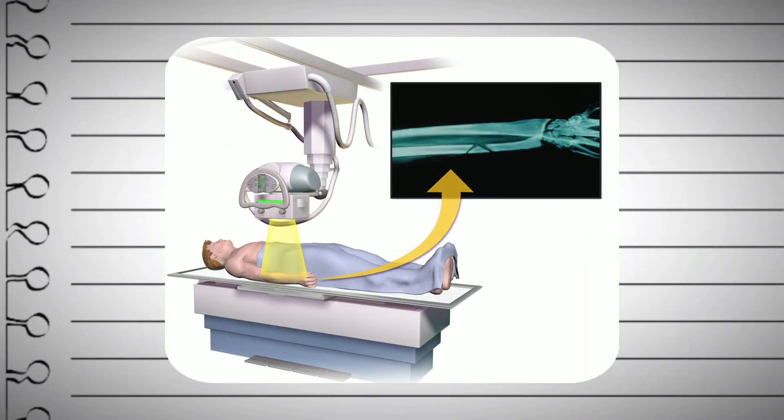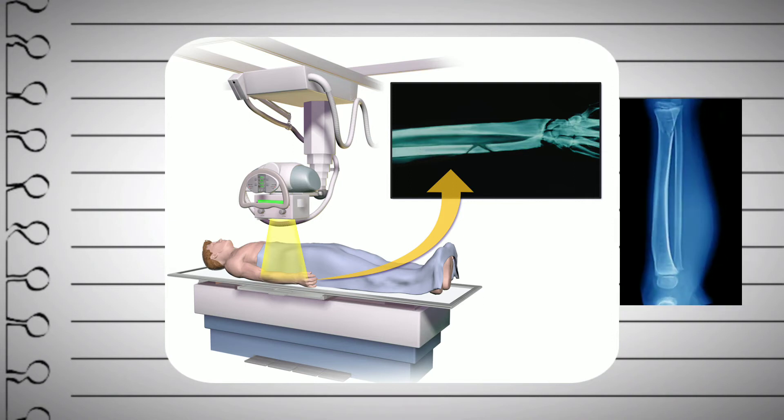For this reason, X-rays are widely used to form images of the internal tissues and structures of the human body. When X-rays travel through the body, they also pass through an X-ray detector on the other side of the patient, and an image is formed that represents the shadow of the objects inside the body.